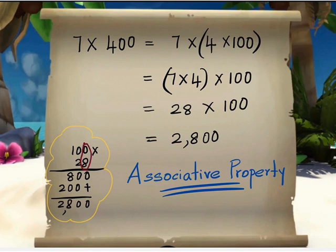8 times 0 is 0. 8 times 0 is 0. 8 times 1 is 8. 2 times 0 is 0. 2 times 0 is 0. 2 times 1 is 2. Now let us add these two values.